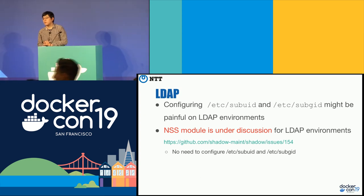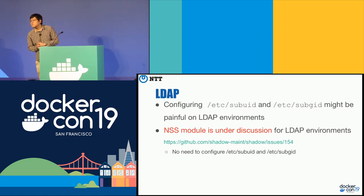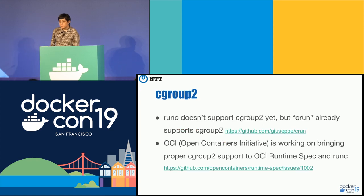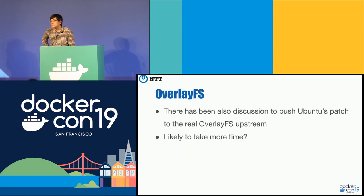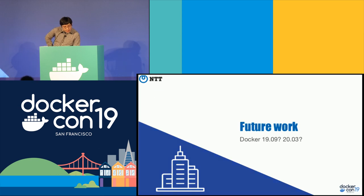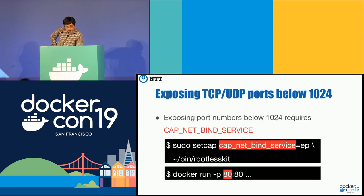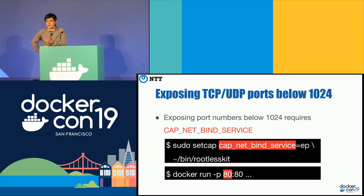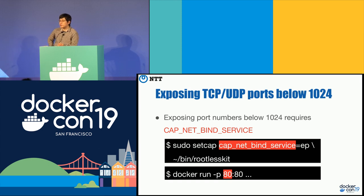Question: For listening on ports below 1024, does that only apply to publishing the port on the host, or also for the process inside the container? For processes inside the container, you don't need this capability. But if you want to listen on port 80 on the host, you need this capability.